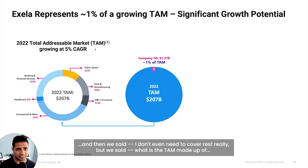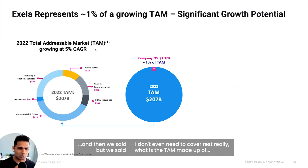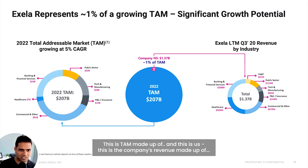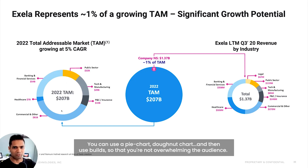And then we said, what is the TAM made up of? This is the TAM made up of. And then this is us — this is the company's revenue made up of. So the headline speaks to the content. Use different charts — anything that adds up to 100%, you can use a pie chart, donut chart.